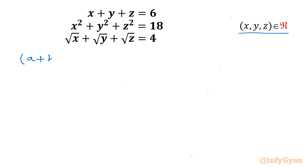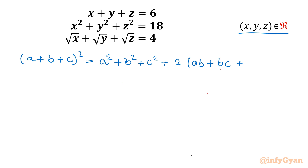Let's begin by writing one powerful algebraic identity: (a plus b plus c) whole square equals a squared plus b squared plus c squared plus 2ab plus 2bc plus 2ca. I will apply this for x, y, z as per our problem.